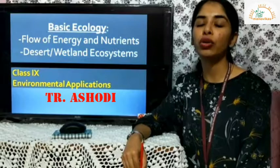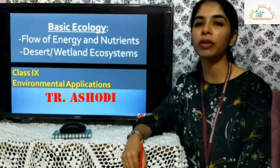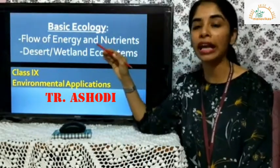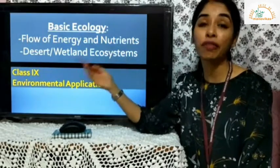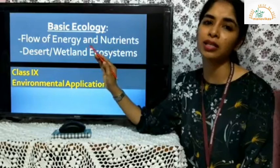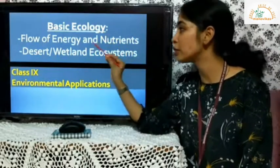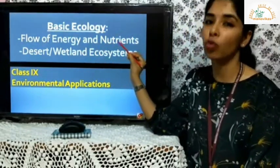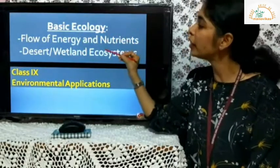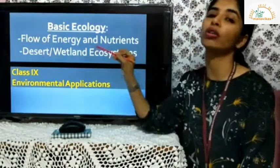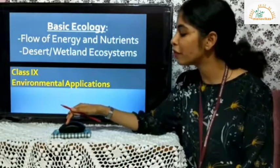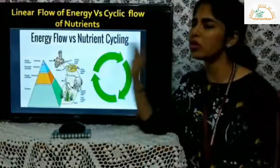This is a video for Class 9th Environmental Applications. We have come to the end of our first unit, Basic Ecology. We will be discussing two topics: flow of energy and flow of nutrients, and we'll see the difference between them. Then we'll cover two important ecosystems on Earth — deserts and wetlands.